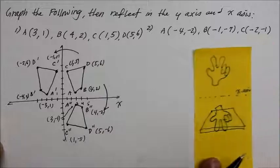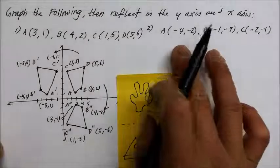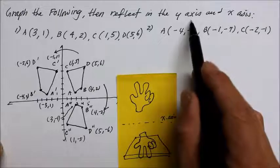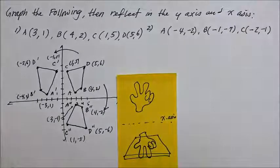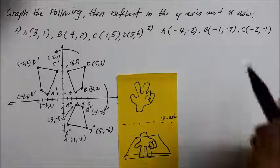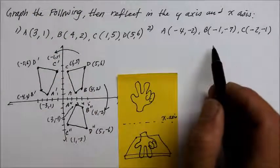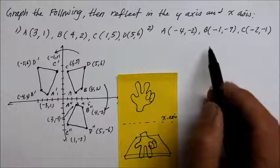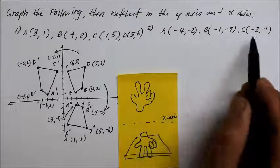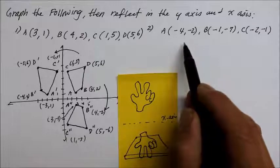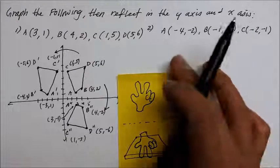Why don't you try the same thing now with number 2? Graph it and reflect it, both over the y-axis and then the x-axis. This time we have 3 vertices, so obviously this will be a triangle. Given that they all have different x values, it looks like it's going to be a scalene of some type.